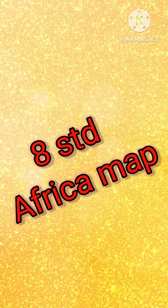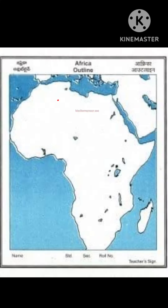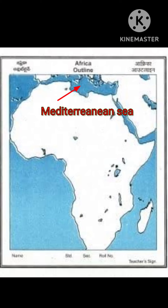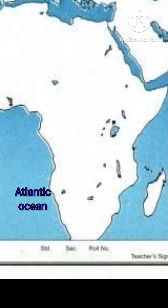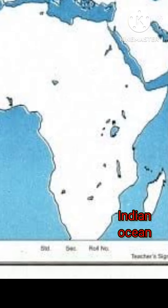Hi dear students, today we are going to see the age standard Africa map. The first place is Mediterranean Sea, located between Europe and the Africa continent. Atlantic Ocean is on the west side of Africa, and Indian Ocean is on the east side of Africa.